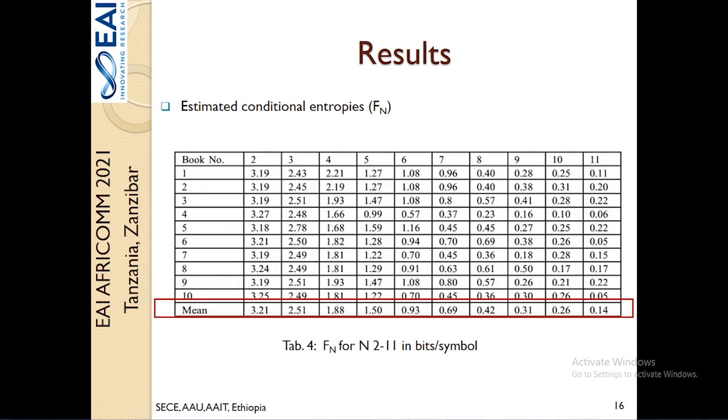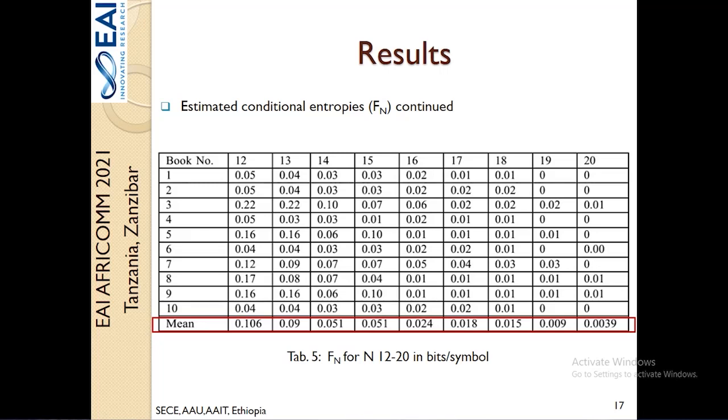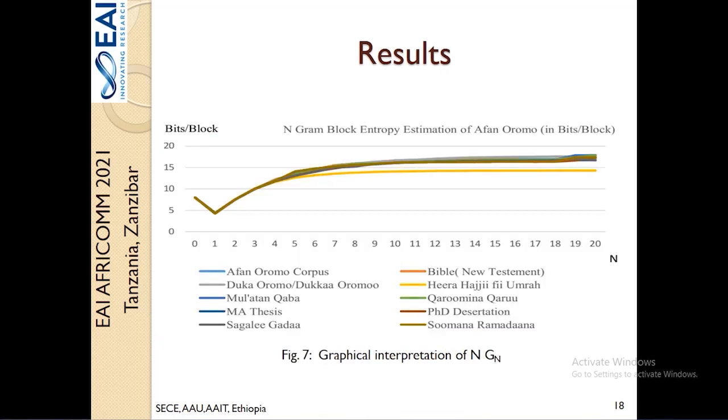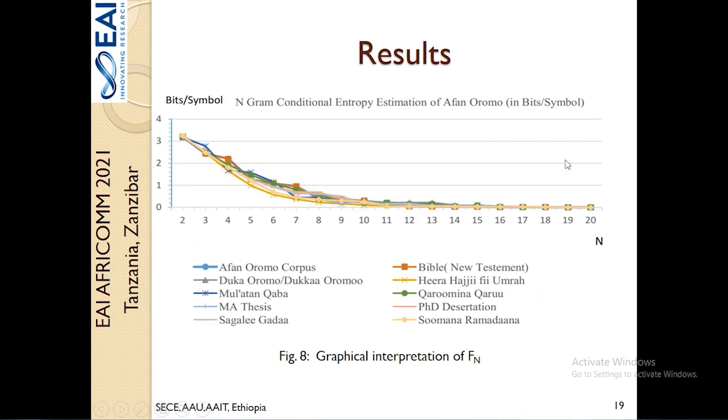We also conducted the same experiment on the conditional entropies using the estimations made on the block entropies. We graphed these estimations to see if they converge because they are extracted from different topics. We see that the estimation of the entropies starts to converge starting from a block size of 5. Most of them lay around 16.5. The same thing also happened for the conditional entropies where the estimation started to converge to 0, indicating that the source is being modeled properly as the block size increases or as the Markovian chain gets knowledge of more n minus 1 symbols. It starts to capture the statistics or the grammatical structure of the language better.